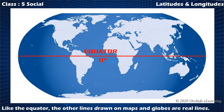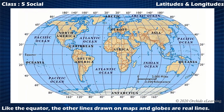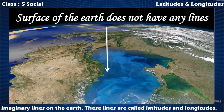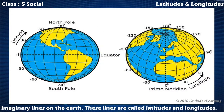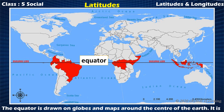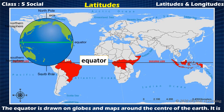Like the equator, the other lines drawn on maps and globes are not real lines. Since the surface of the earth does not have them, we say that they are imaginary lines on the earth. These lines are called latitudes and longitudes. Let us see what a latitude is first.